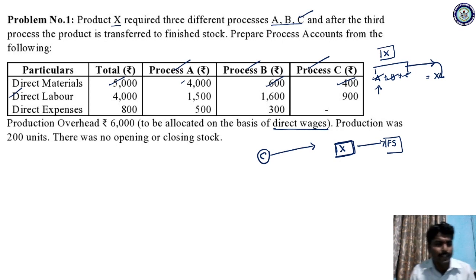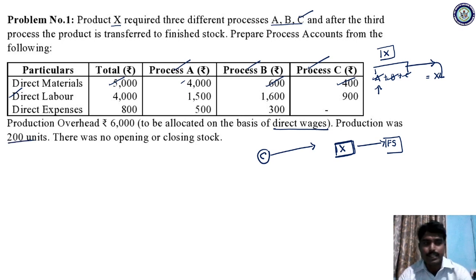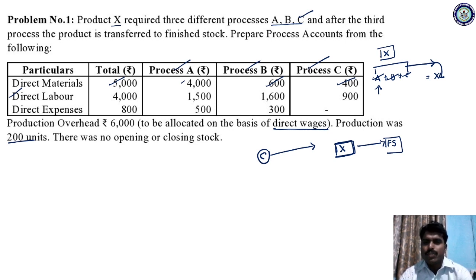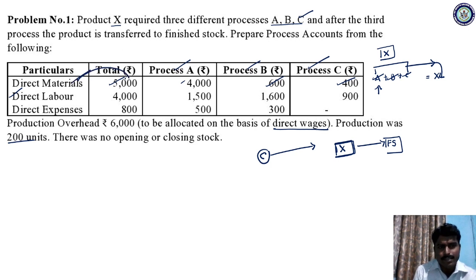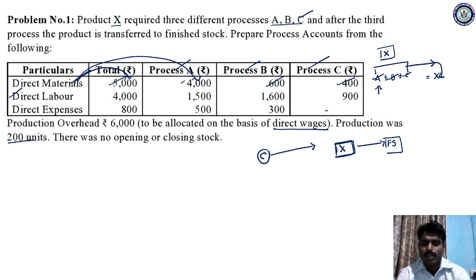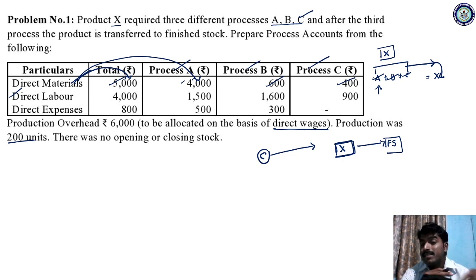Production output was 200 units, and there was no opening or closing stock — a very simple problem. Now let us start with the solution. We will prepare process A account first. Draw the format: particulars, quantity, rate, amount on both the debit and credit sides. Everyone should fill in the format clearly — it should be neatly written in the examination. There is no information regarding quantity and rate here, but the amounts are given, so we fill accordingly.